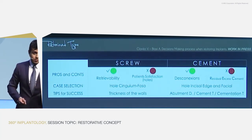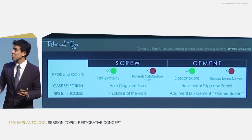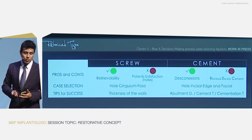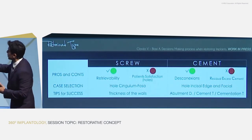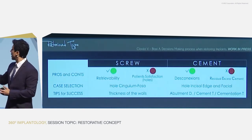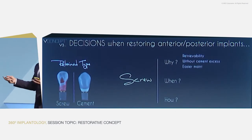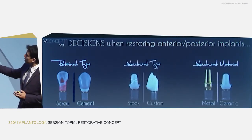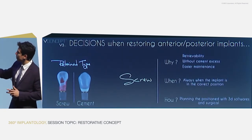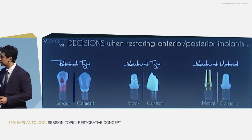About cement restorations: the advantage is fewer disconnections and one-abutment-one-time placement. The problem is residual excess cement, which can cause complications. Use cement restorations when the screw-access hole would be facial or buccal, and always pay attention to the abutment design, the cement used, and the cementation protocol. Screw restorations offer more retrievability, easier maintenance, and are preferred when the implant is in the correct position — which is achievable with 3D software and surgical guides.